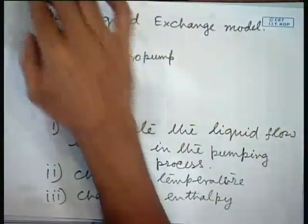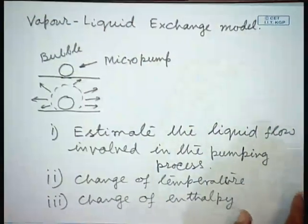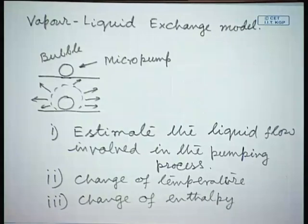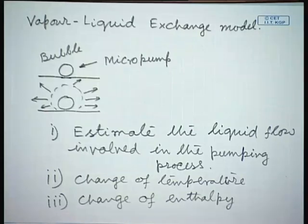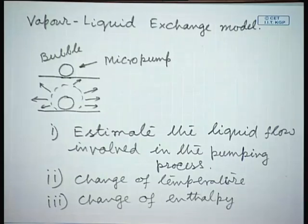Welcome back. We will continue with our previous discussion. We were discussing different models of heat transfer during nucleate boiling. The present model we are interested in is the vapor-liquid exchange model. As the mechanism has been described, a bubble as it changes its shape and size acts as a micro pump — when it expands it pushes fluid, and when it contracts or leaves the surface, it induces fluid motion towards the center of the bubble.